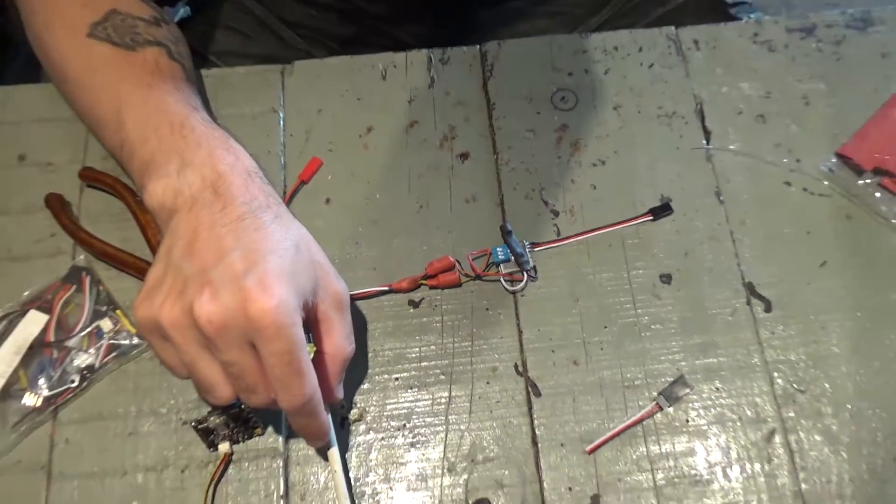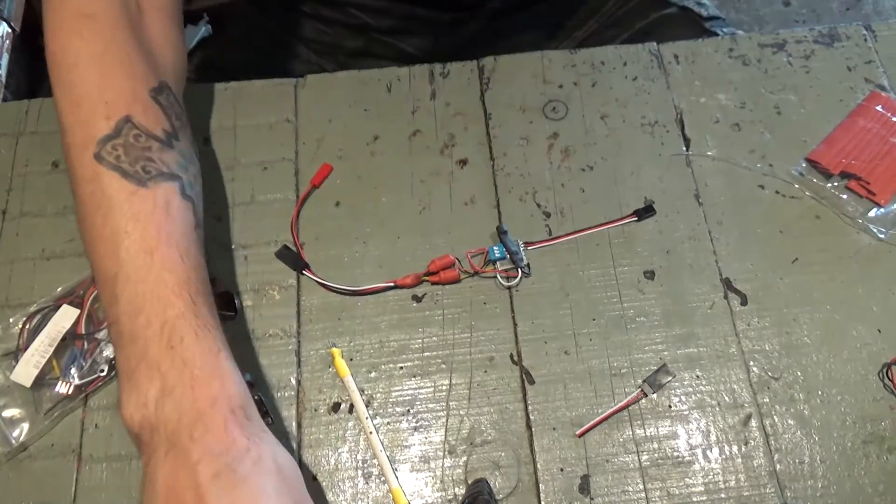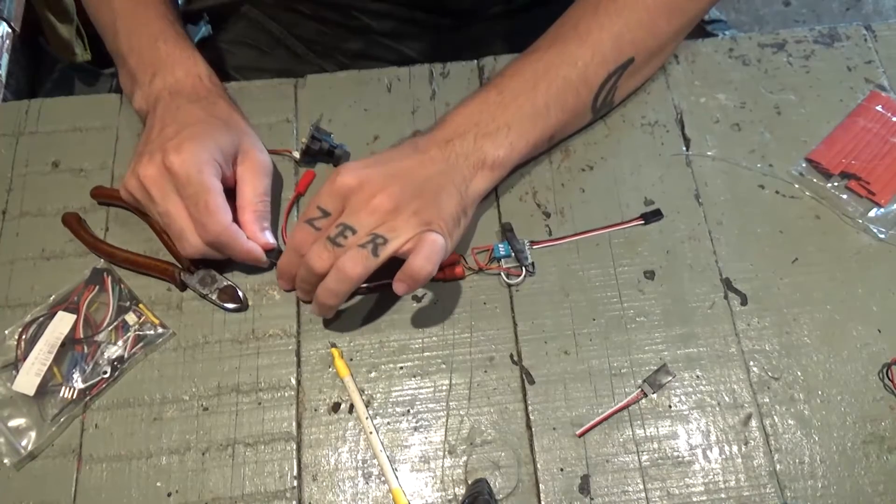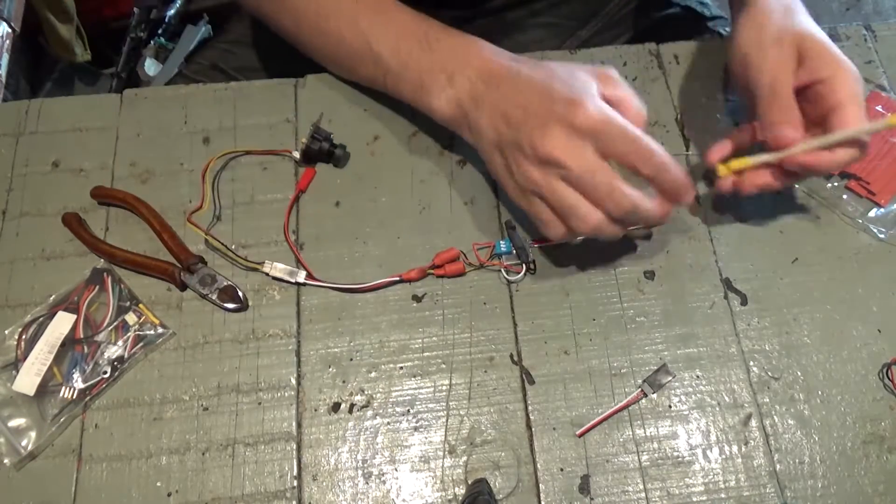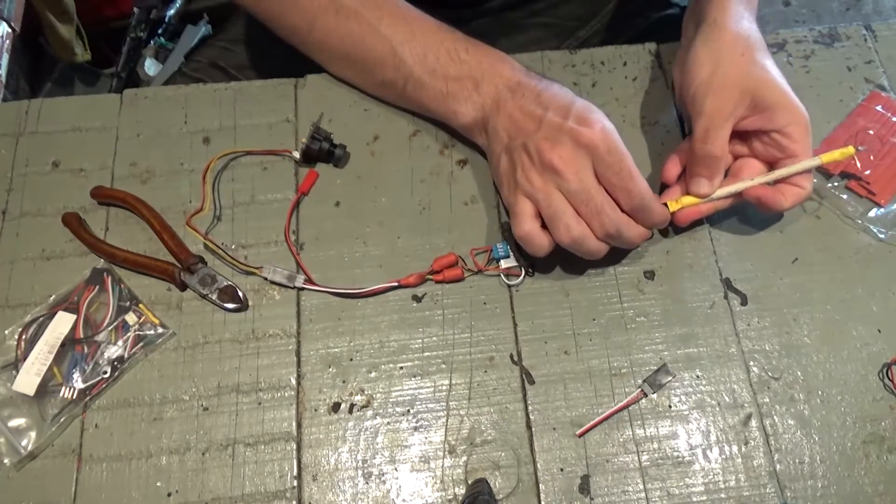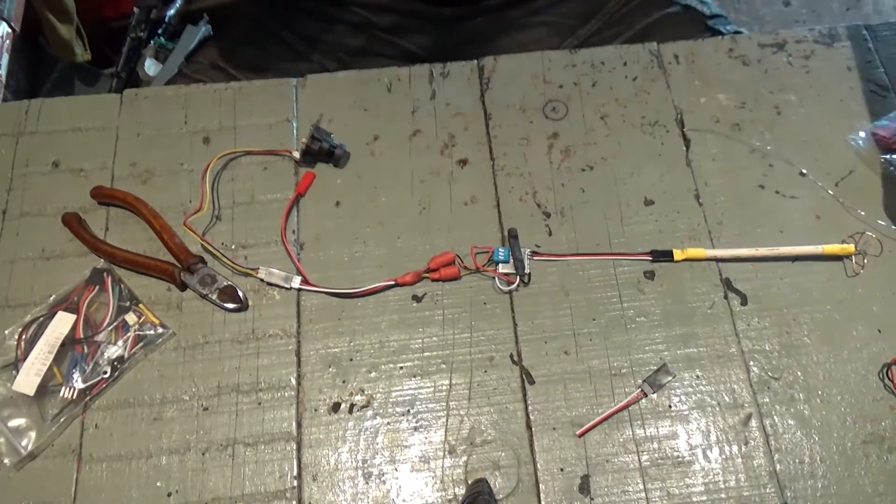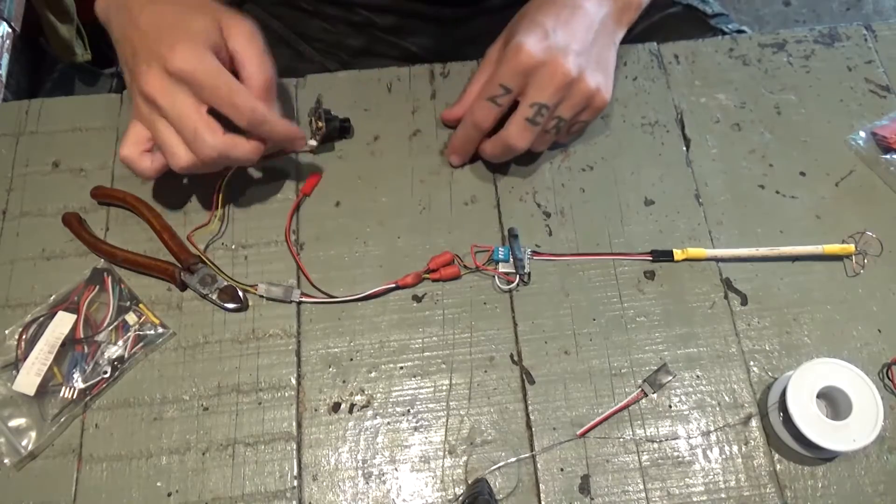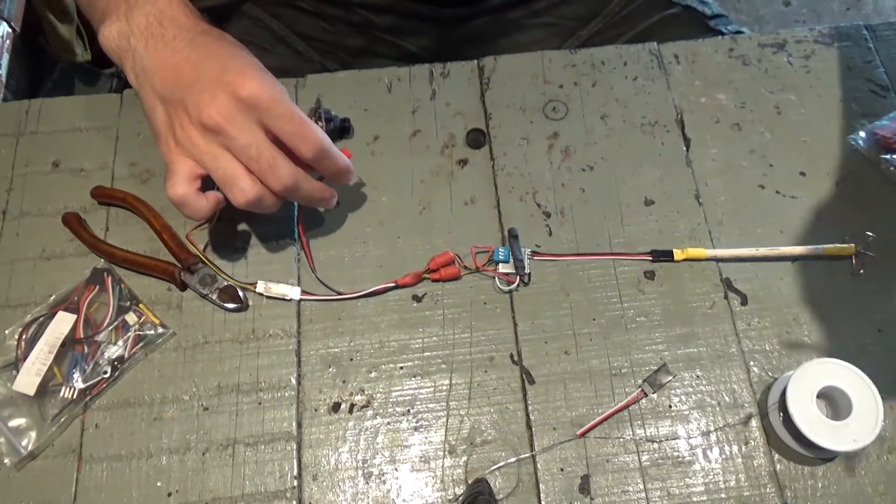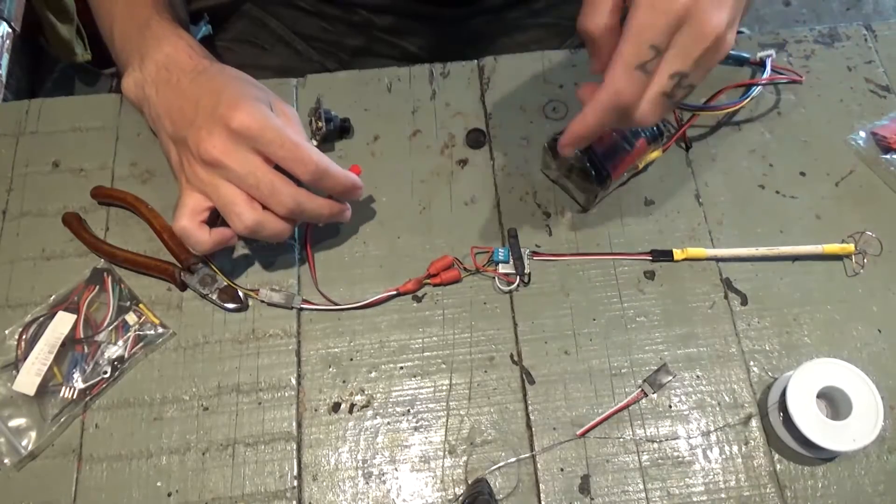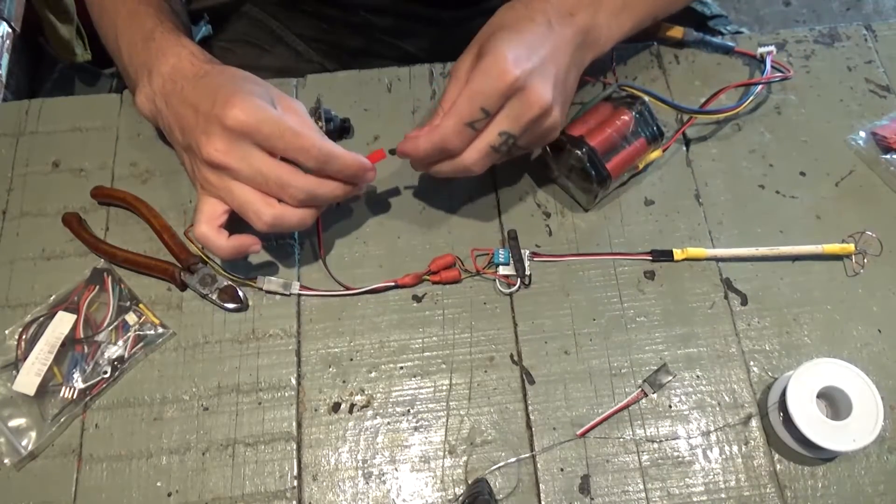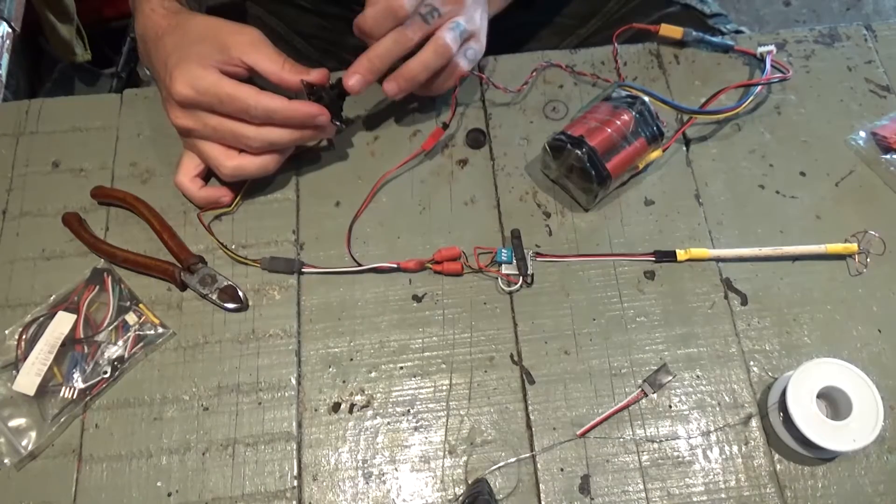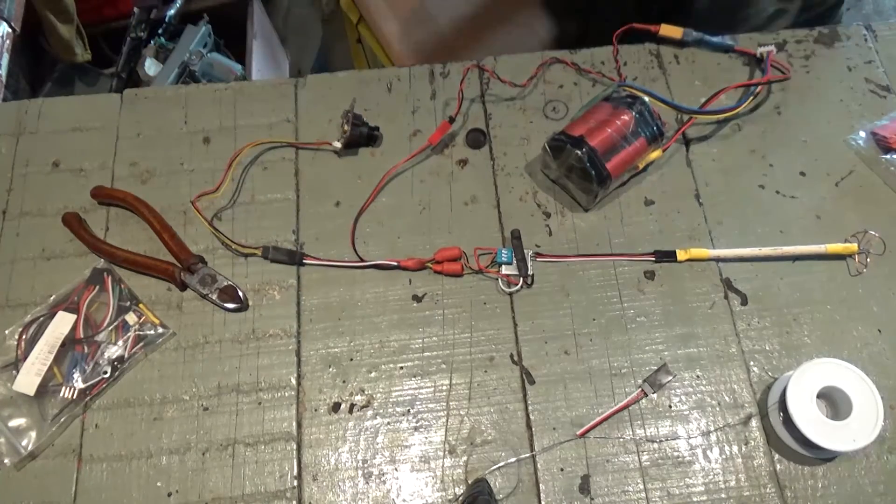So to test it, I'll just plug in the camera on this side, plug the antenna on this side, and plug in a battery here. And right now, I should have image on my FPV.